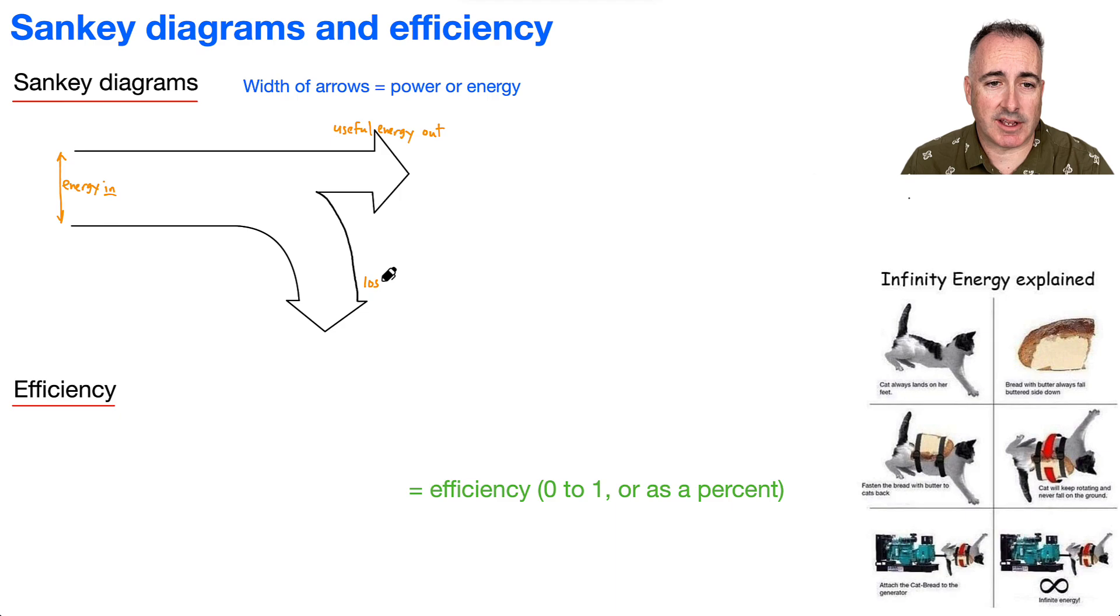And down here, this is everything else that gets tossed away. It's loss. This could be due to heat, due to friction or whatever else causes a loss of energy. This is sort of how we do it. The size of these arrows, the width of these arrows, will have numbers to them. And so that's how you would then use those to calculate something.